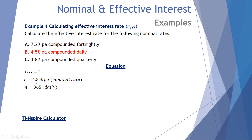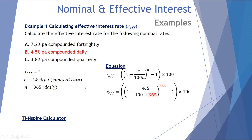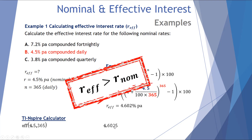Next, 4.5% per annum compounded daily. Substituting into the equation: rate = 4.5, N = 365 for daily. That returns an effective interest rate of just over 4.6% per annum. Using the TI CAS calculator with the effective interest formula gives the same value of 4.6025%. Always remember the effective interest rate must be greater than the nominal rate.